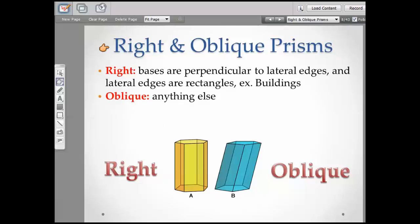Right and oblique prisms. A right, the bases are perpendicular to lateral edges, and lateral edges are rectangles. And an example of that would be buildings that you see in downtown areas, or any building. I just think of the high rises. And oblique is any other kind of prism.